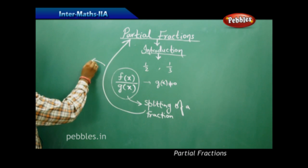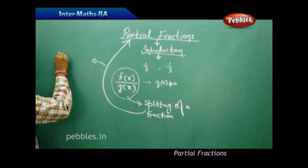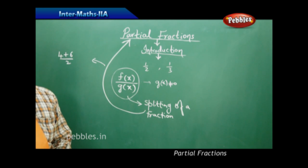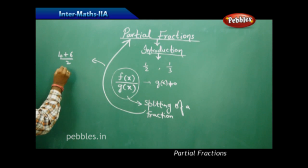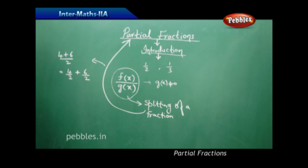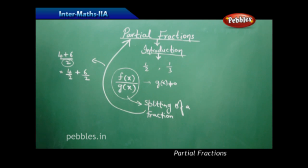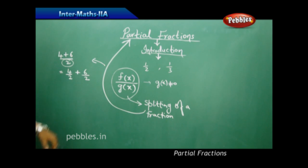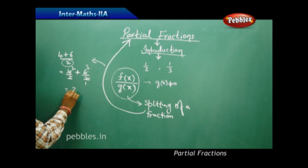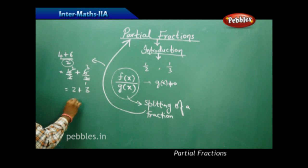For example, if I have the expression (4+6)/2 and I want to split this fraction, I write it as 4/2 + 6/2. I split the fraction independently using the denominator 2. Therefore, this can be written as 4/2 + 6/2, which on simplification gives 2 + 3.